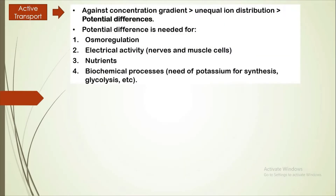For active transport, it is always working against the concentration gradient. This will generate unequal ion distribution, and finally will generate potential differences. Potential difference is needed for osmoregulation, electrical activity, nutrient uptake, and biochemical processes.